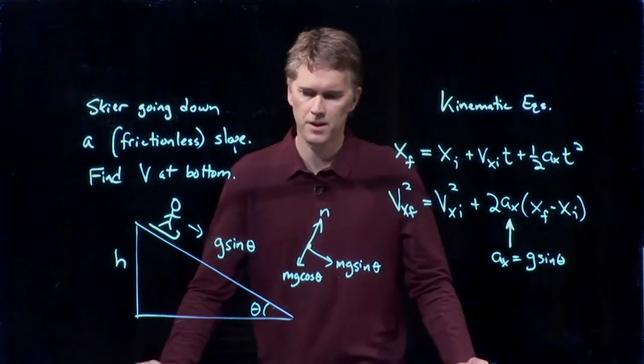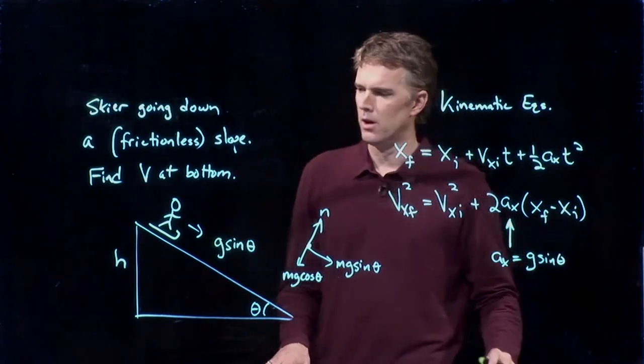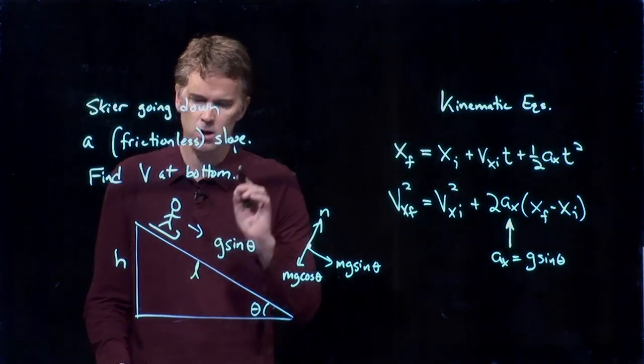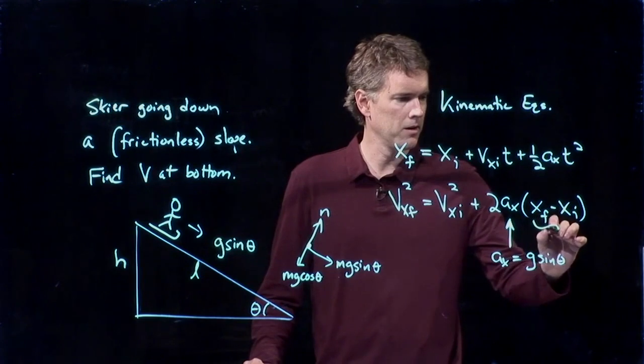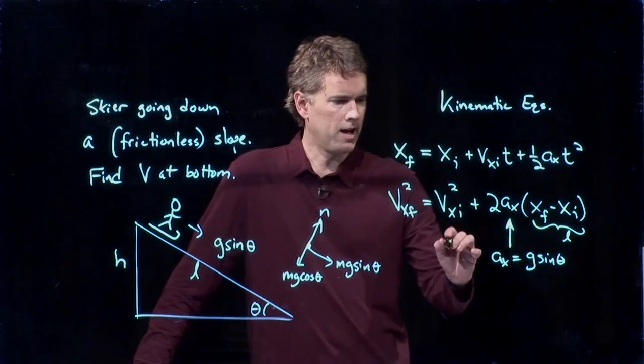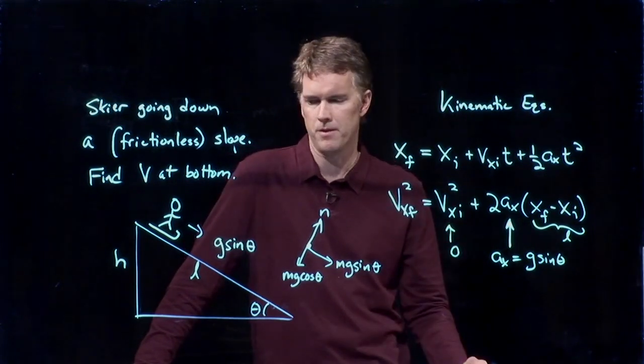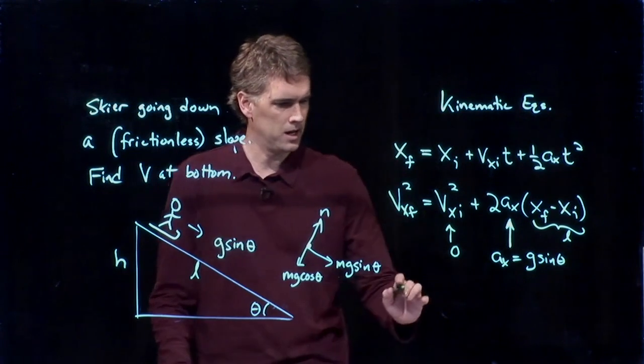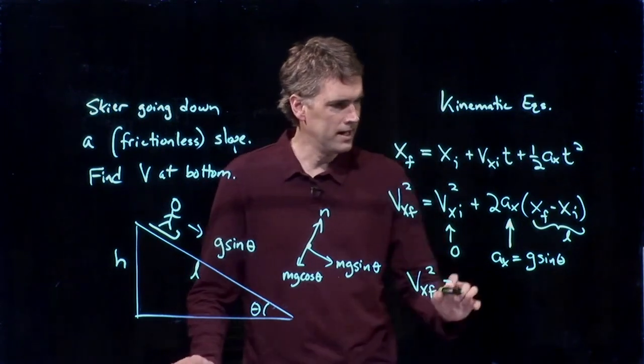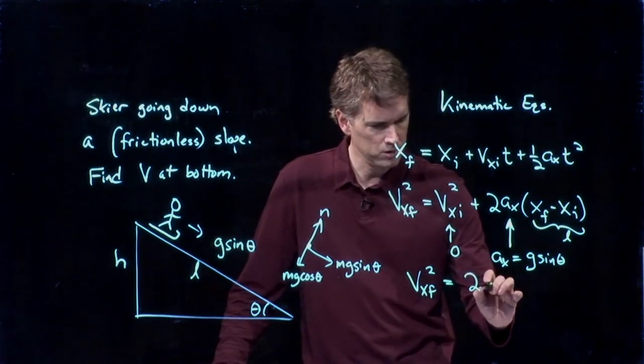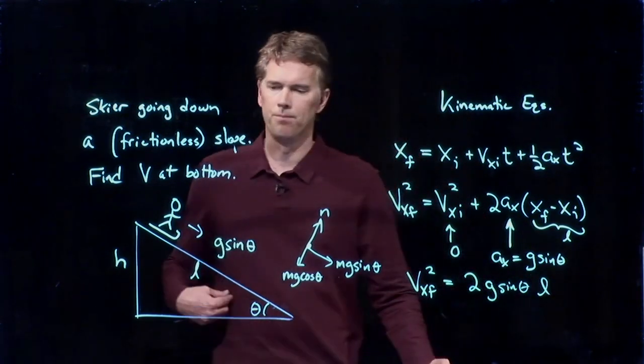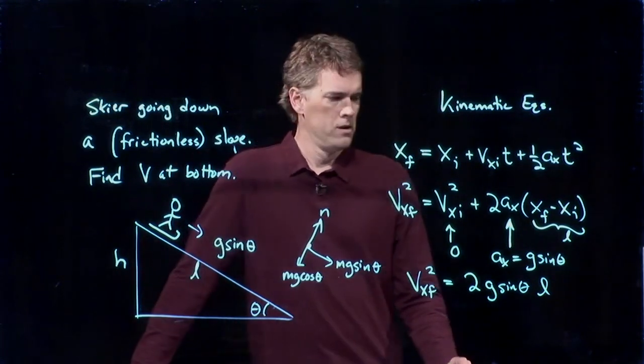All right. What about this x final minus x initial? Well, that's just how far I go. So let's call this hypotenuse. How about we'll call it L? So this thing right here is just going to be L. And vx initial, we'll say we start from rest up there. And now we can calculate vx final. We get vx final squared is equal to 2g sine theta. All of that times L.